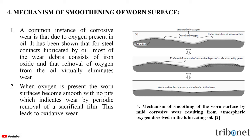It has been shown that for steel contacts lubricated by oil, most of the wear debris consists of iron oxide, and the removal of oxygen from the oil virtually eliminates the wear. When oxygen is present, the worn surfaces become smooth with no pits, which indicates wear by periodic removal of a sacrificial film. This leads to oxidative wear.